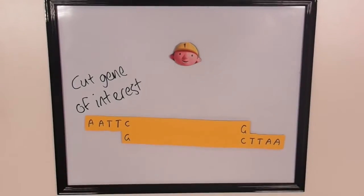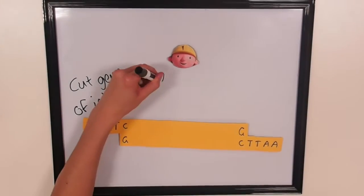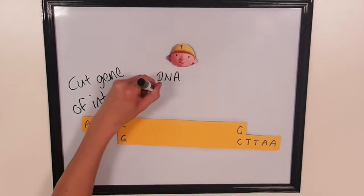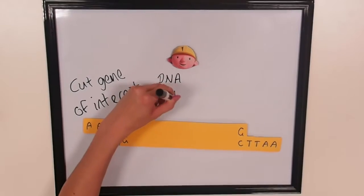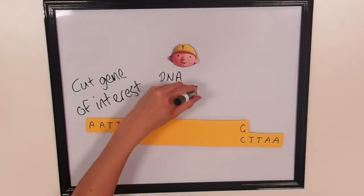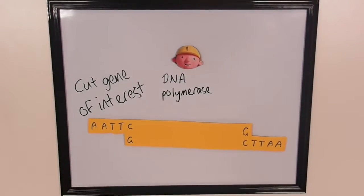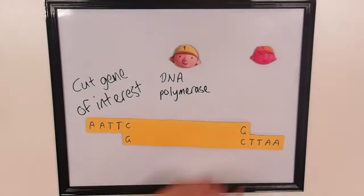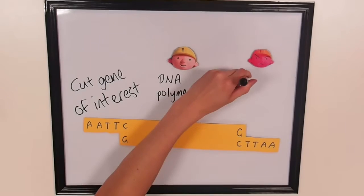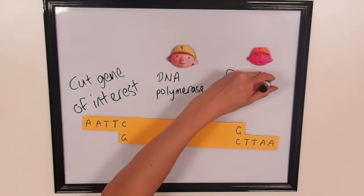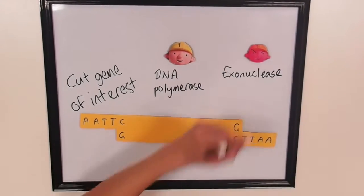If your sticky ends are not compatible for insertion, then they can be modified through exonuclease and polymerase activity by enzymes such as T4 DNA polymerase.